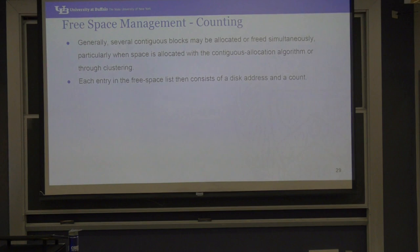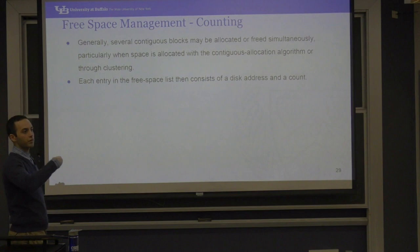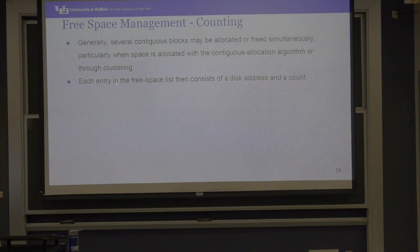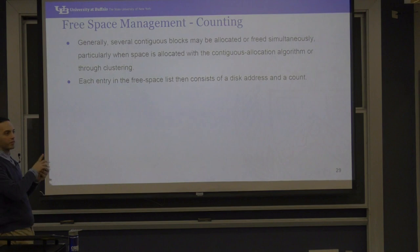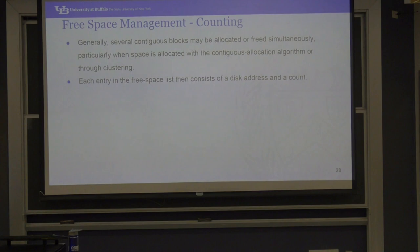For counting: instead of storing information in the block itself or as a group, we allocate a separate list. In each entry, we keep the starting address of free space and the number of contiguous free blocks. So at this location we have two free blocks, at this location we have four blocks, at this location five blocks. This wastes a bit of space on the hard disk to keep the free table, but it allows much faster lookup.